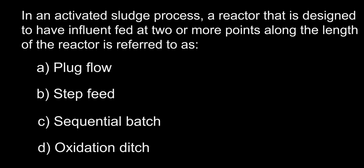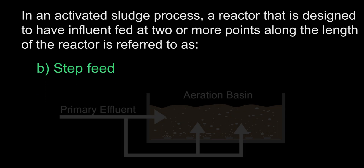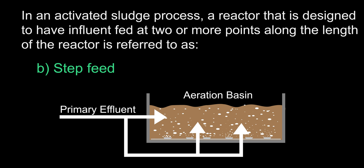In an activated sludge process, a reactor that is designed to have influent fed at two or more points along the length of the reactor is referred to as: A. Plug flow, B. Step feed, C. Sequential batch, D. Oxidation ditch. The answer is B, step feed.